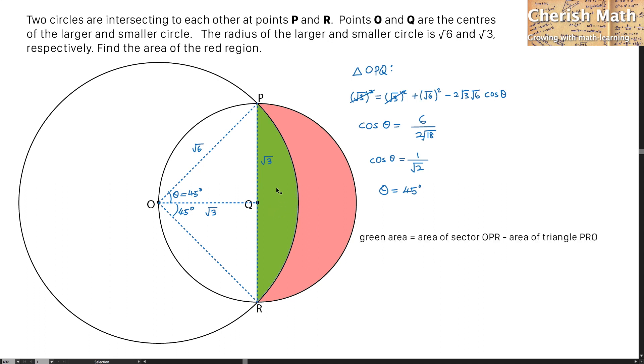To work out the area of this green region, I use the area of sector OPR minus the area of triangle PRO, which is this big triangle here.